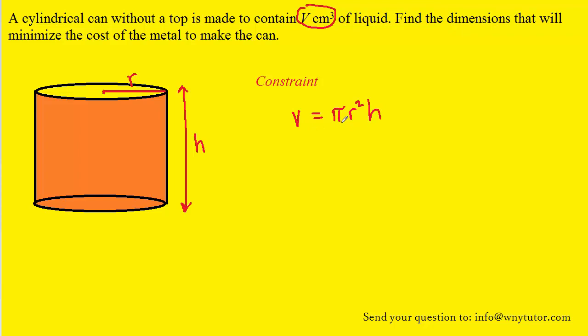The next thing to turn to is the question itself. The question is asking us to minimize the cost of the metal to make the can. Well here's a key idea: in order to minimize the cost of this can, what we really need to do is to minimize the surface area or the amount of material that's used to make the can.